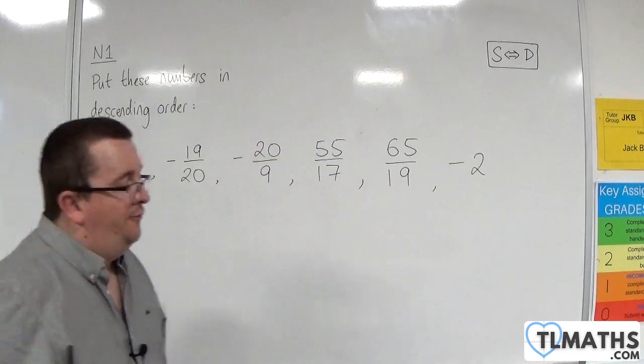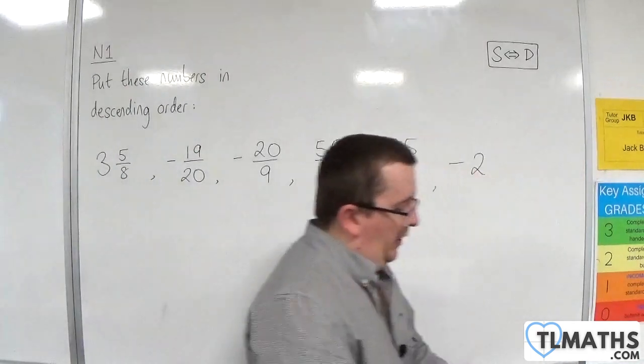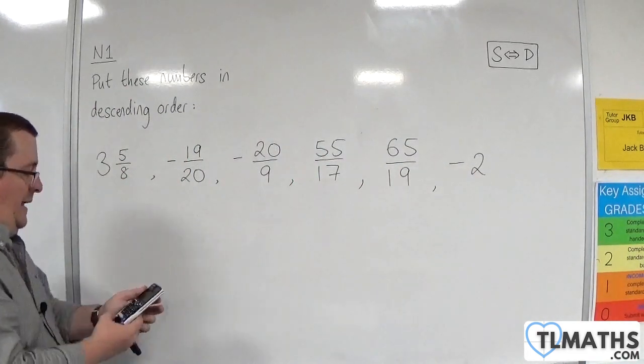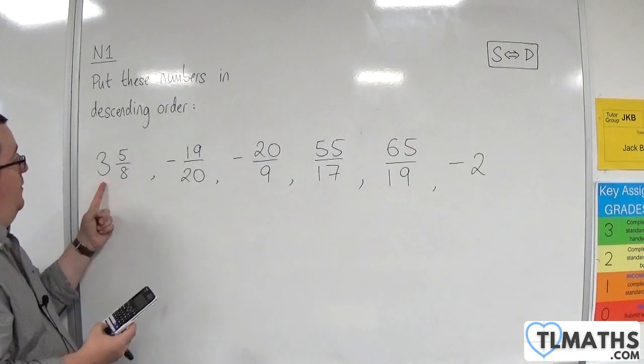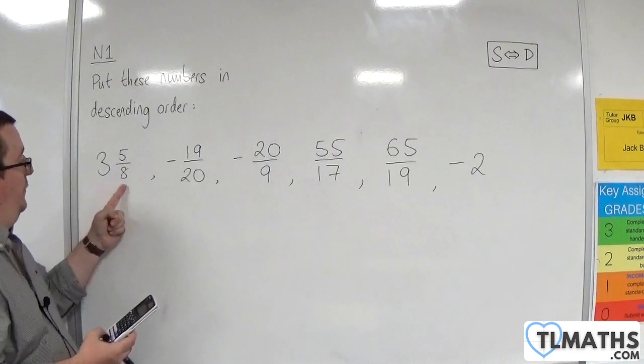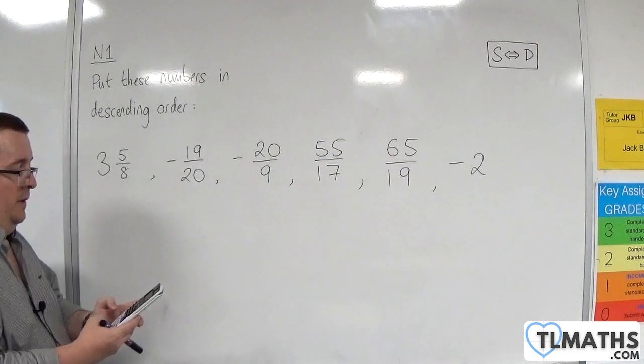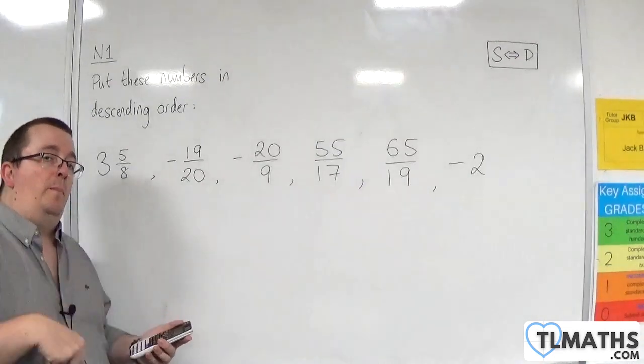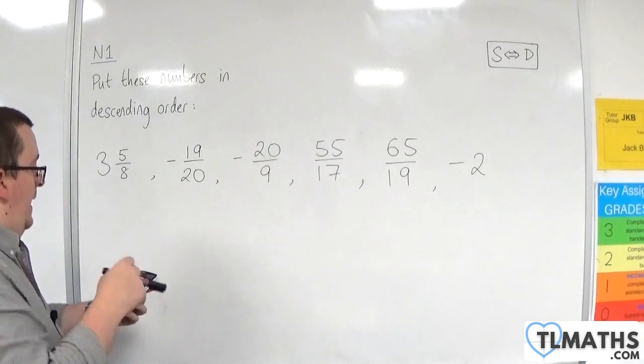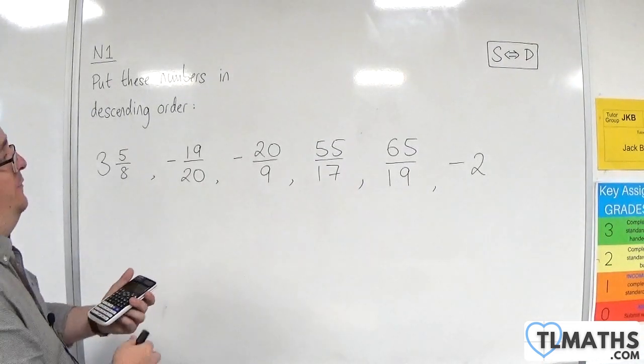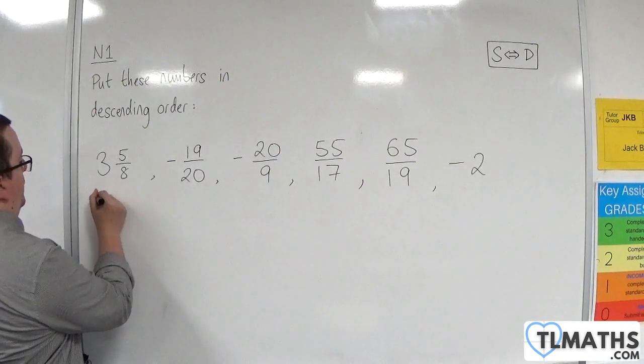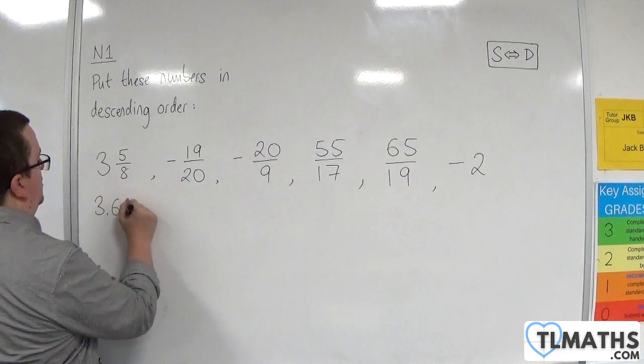So 3 and 5 eighths. What I need to do for this, to convert it into a decimal, is to write on my calculator 3 plus 5 eighths. Now my calculator gives me 29 over 8, so it converts it to an improper fraction for me. And now I'm going to press the SD button and that converts it to a decimal and that's 3.625.